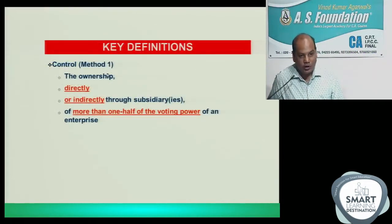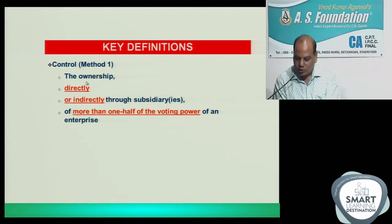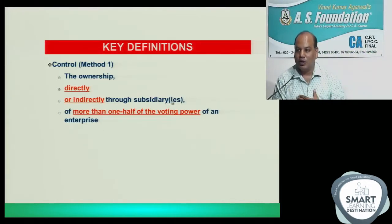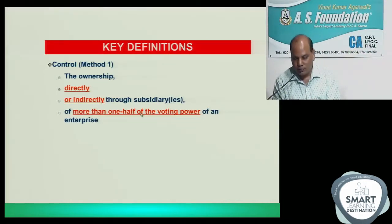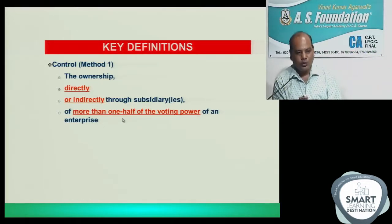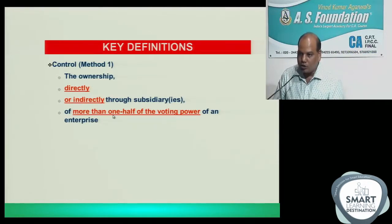You should know what control means - how do we get control as per this standard. There are two ways to acquire control; students know only the first one but there is a second method also. The first method is ownership - directly or indirectly through subsidiaries. You may not hold shares in a company, but your subsidiary may hold more than 50% share in another company - then that third company is also your subsidiary and will also be consolidated. So directly or indirectly, if you hold more than one half of the voting power of an enterprise, you are the parent and the other entity is the subsidiary.